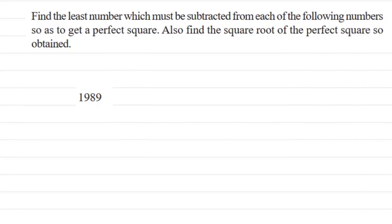In all the questions we've done earlier, we've seen that all the numbers were perfect squares already. Now what if the number is not a perfect square? In that case, you either have to subtract some number to get a perfect square, or add some number to make it a perfect square. This question asks you to find the least number which must be subtracted from each number to get a perfect square.